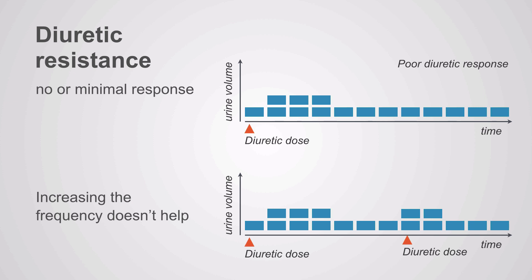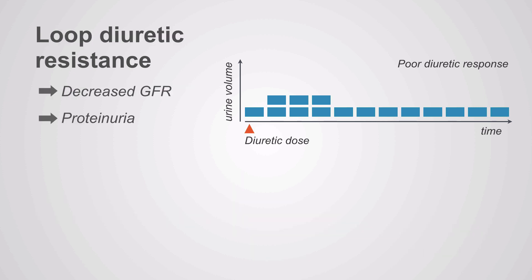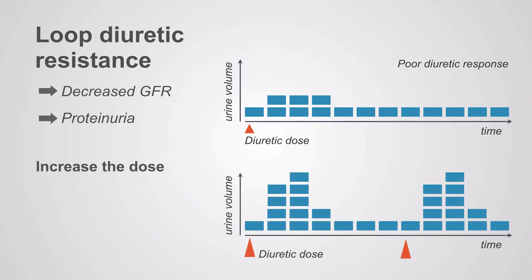The other pattern of diuretic response is no or minimal response. Here, increasing the frequency doesn't help — you just get the same poor response more often. This pattern of resistance is usually due to decreased glomerular filtration rate, renal failure, or significant proteinuria. It is thought that the proteinuria that gets into the tubular fluid binds up the diuretics, which are prone to being protein-bound.